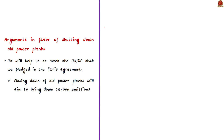First, let us discuss the positives of closure of aging coal power plants. Old coal power plants are a potential source of pollution — they emit a lot of greenhouse gases. All coal power plants pollute, but old ones are more polluting than new ones because they use outdated technology. They are inefficient, expensive, and time-consuming. So closing them will bring down carbon emissions and cut greenhouse gas emissions.